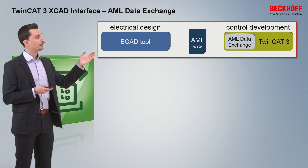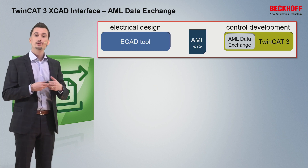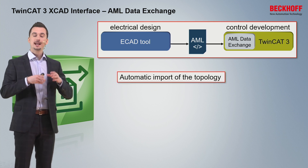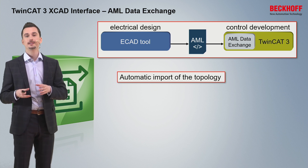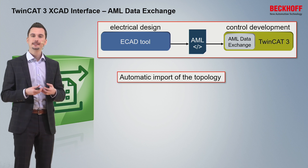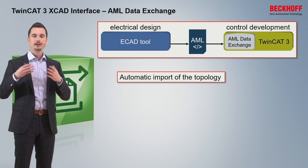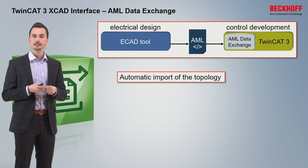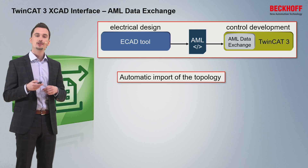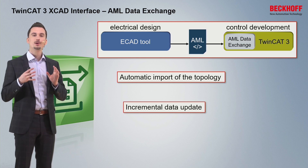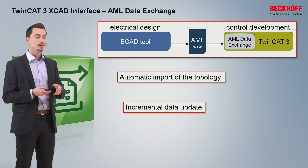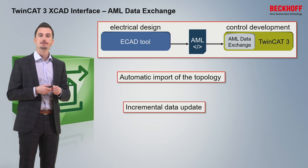If you have your IO topology ready on the ECAD tool side, you can simply export it and import it on the TwinCAT 3 side, and the whole IO topology is then automatically created without having to add anything manually. With the help of unique AML IDs, it is possible to uniquely specify each component added to the AML format, which enables an incremental data update.